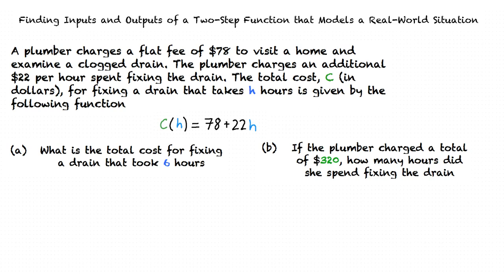To find the total cost for fixing the drain, we need to substitute 6 in for h in our function, because this function will output the cost if we input the amount of hours spent fixing the drain. Solving our function out, we find that the total cost for fixing a drain that took 6 hours of work is $210.